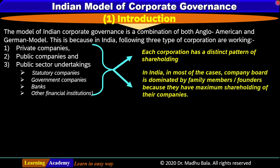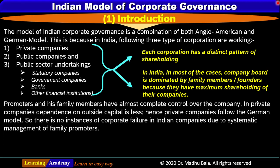In India, in most cases, the company board is dominated by family members and founders because they have maximum shareholding of their companies. The promoters and their family members have almost complete control over the company. In private companies, the dependence on outside capital is less, hence private companies follow the German model. There are very low instances of corporate failure in Indian companies due to systematic management by family promoters.